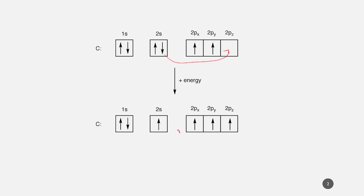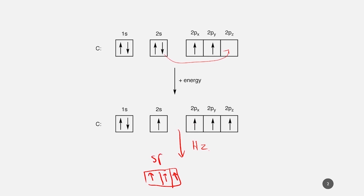What happens next is the hybridization. In this case, two p orbitals will be hybridized with the s orbital. So you will have three electrons in the sp2 orbital. The '2' refers to the two electrons that come from the p orbital. The last p orbital will stay in the pz orbital.